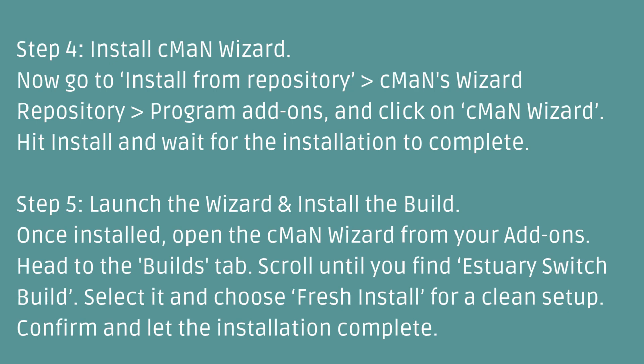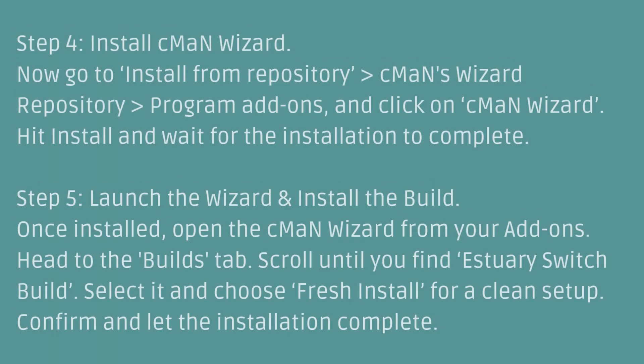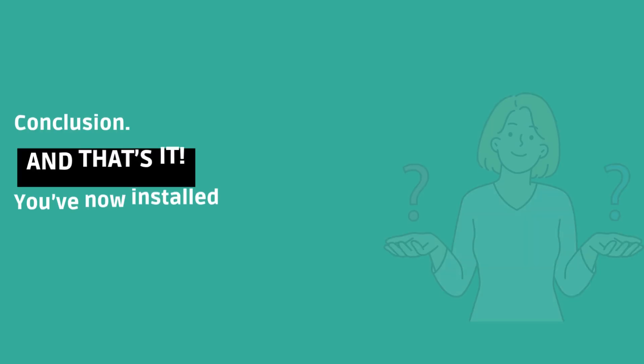Step 5: Launch the wizard and install the build. Once installed, open the C-Mine Wizard from your add-ons. Head to the Builds tab. Scroll until you find Estuary Switch Build. Select it and choose Fresh Install for a clean setup. Confirm and let the installation complete.